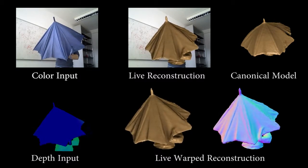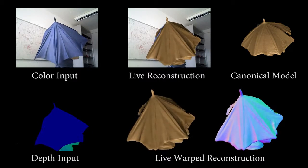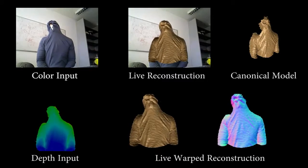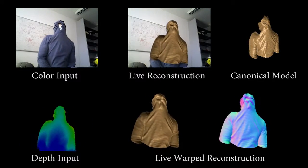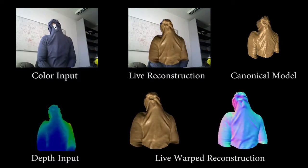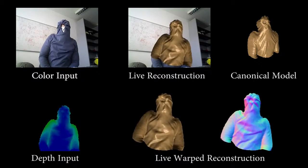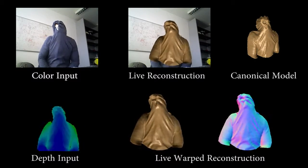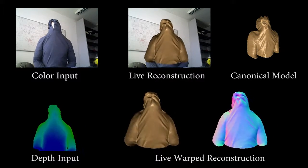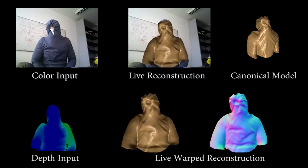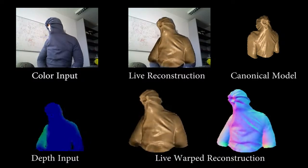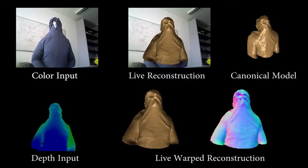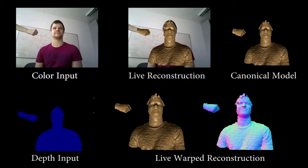Alignment is based on dense depth correspondences and sparse SIFT feature matches. Given the depth and color correspondences, we use a variational optimization approach to find the best alignment. We employ a data-parallel GPU solver to optimize the deformation field at real-time frame rates.